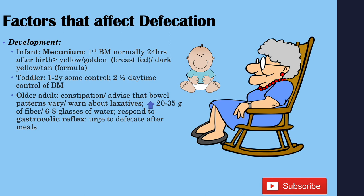In older adults, they may suffer from constipation or believe they do. Some older adults believe that being regular means defecating every day, so it's important to inform patients that defecation habits can vary. Since older adults may turn to laxatives, let them know that excessive laxative use can cause a chronic constipation problem. If they're concerned about constipation, they can increase fiber to 20 to 35 grams per day, include six to eight glasses of water, and respond to the urge to defecate — called the gastrocolic reflex — which is the urge to defecate after meals.